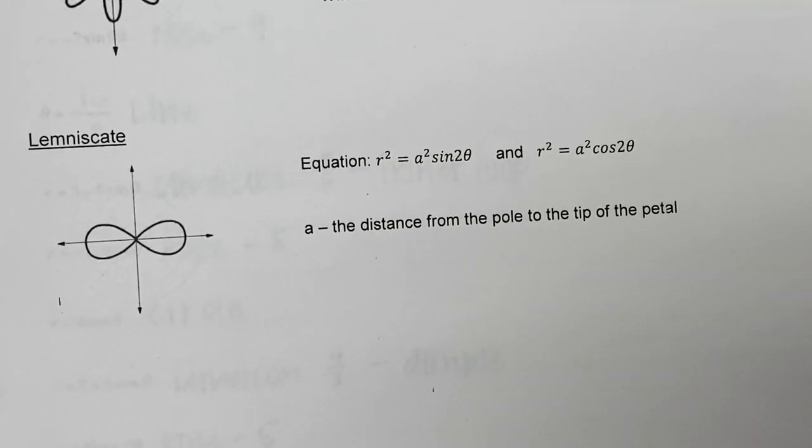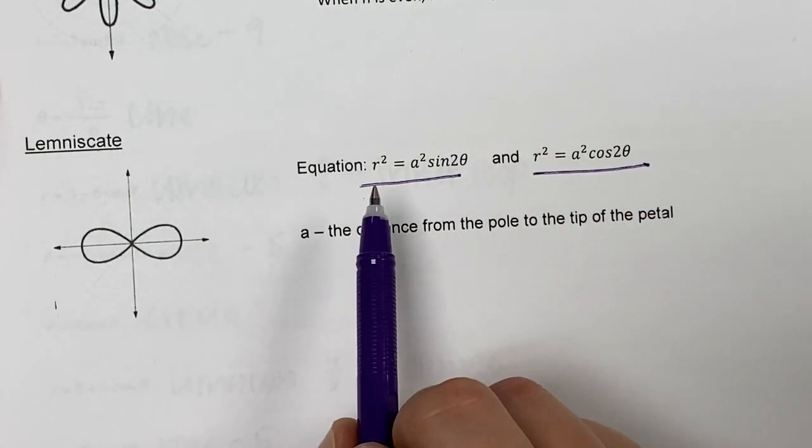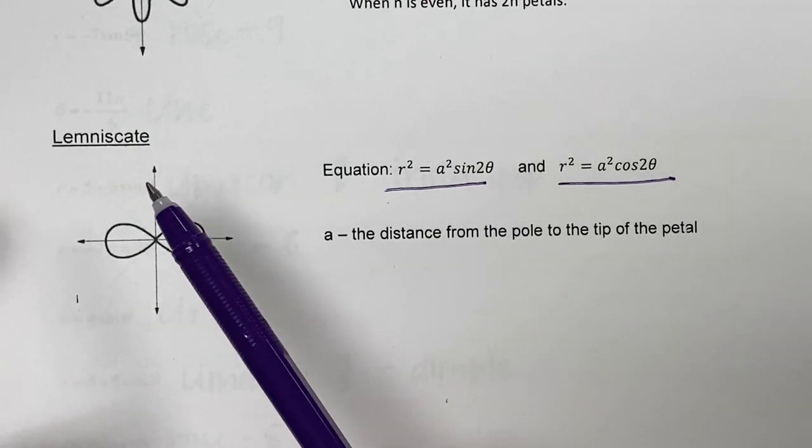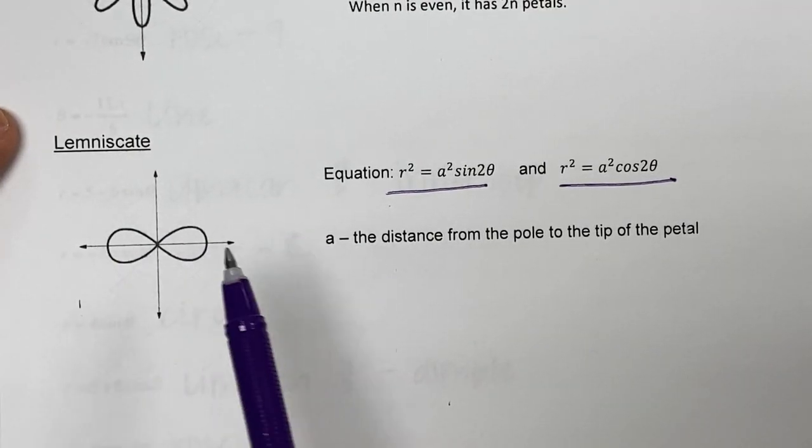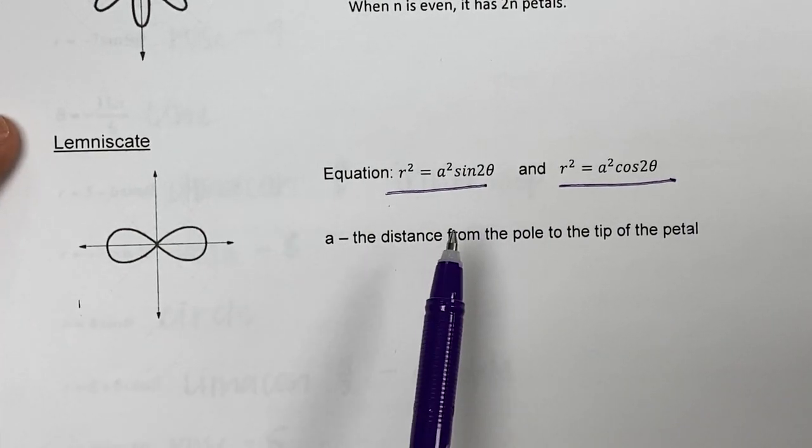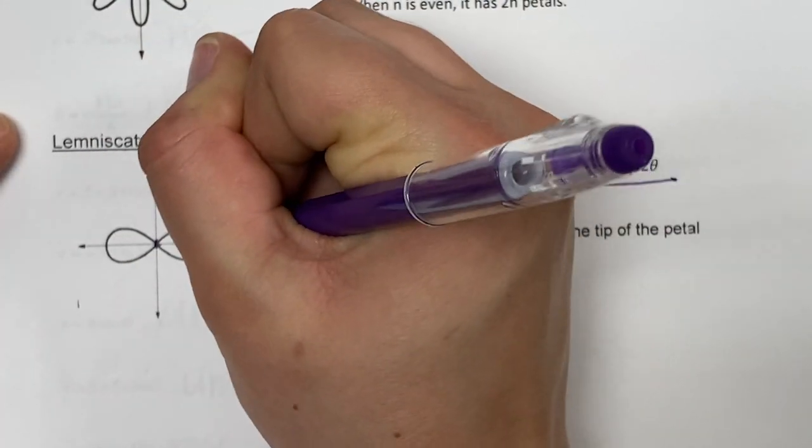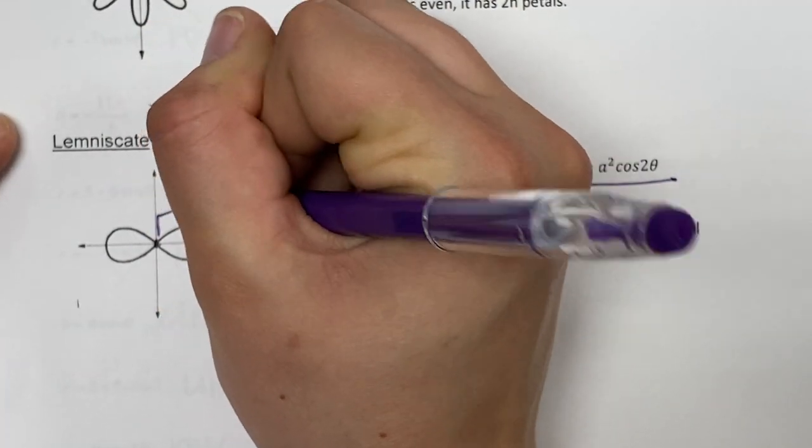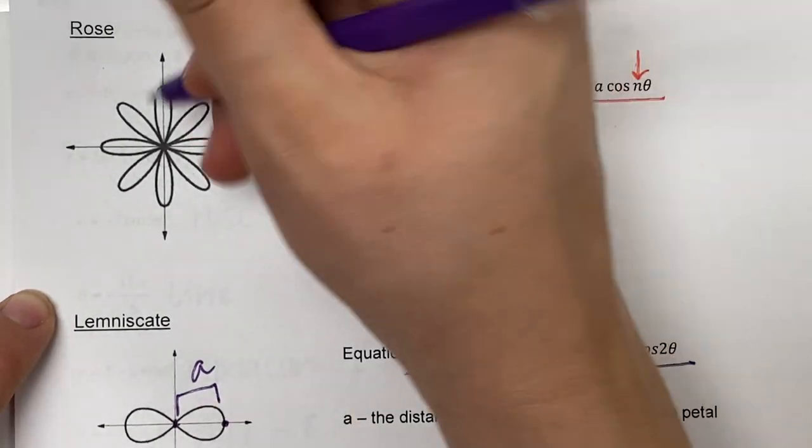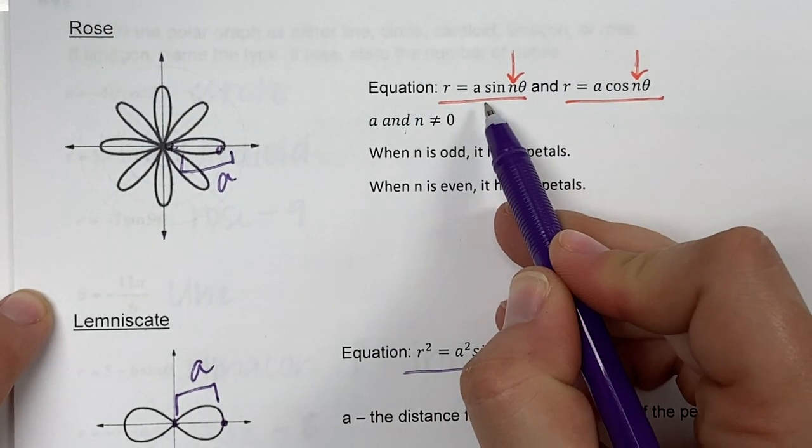Last one is lemniscate. This one is really easy to identify because it's the only one with r squared. So when you see r squared, you know it's lemniscate. It makes this figure-eight shape. You'll look into your project to see the difference between sine versus cosine. The value a is the distance from the pole to the end of the petal. That's the same for rose too—the length of the petal is that a value, the number in front.